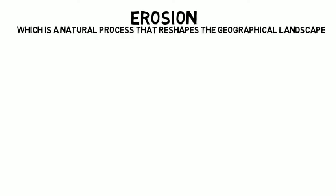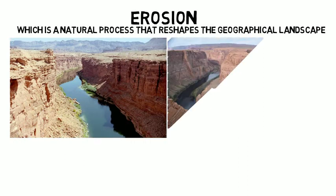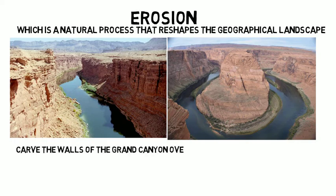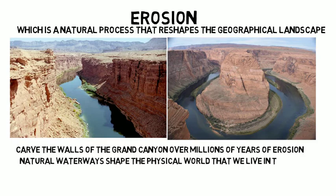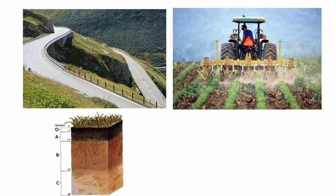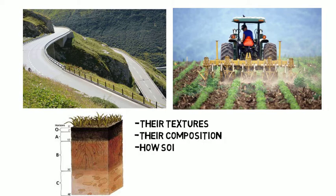Let's talk about erosion, which is a natural process that reshapes the geographical landscape. Have you ever seen in-person or seen pictures of the Colorado River and admired how it snakes back and forth in between the vast canyon walls? What you might not realize is that the Colorado River has helped carve the walls of the Grand Canyon over millions of years of erosion. The topic of erosion is particularly important to humans when it comes to urban planning and agriculture, and it's something you will spend a great deal of time on when you analyze different types of soil, their textures, their composition, how soil is formed, porosity, and their erosion rate, just to name a few.